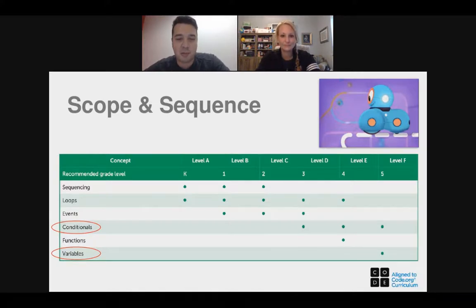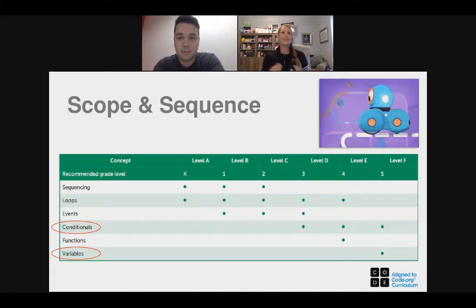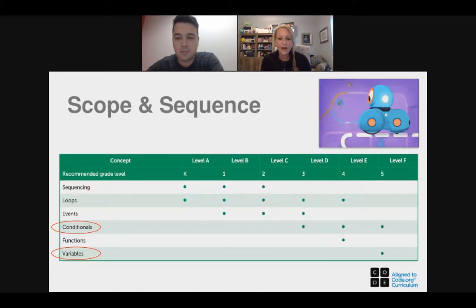Let's review some of the earlier concepts so folks are refreshed. I always think of sequencing — starting in pre-K and kindergarten. I think back to those old worksheets where you would cut out step one, step two, step three: in the morning I get up, then I brush my teeth, then I go to school. That's what sequencing is — what's going to happen first, second, and third. That's what coding is all about. We introduce that even in kindergarten, pre-K through first grade on up. Same with loops — telling a robot to perform a function over and over again — and events.